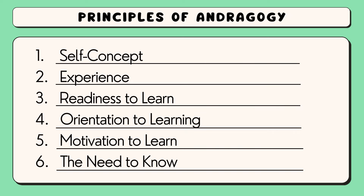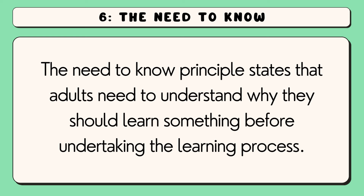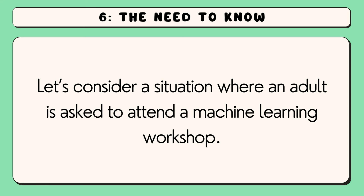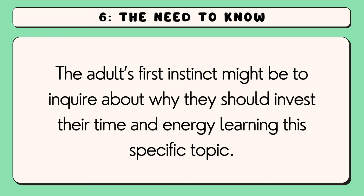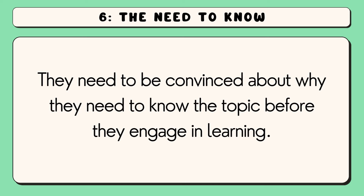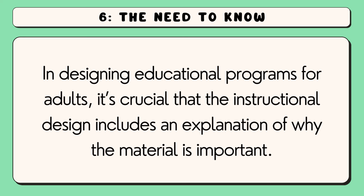Finally, the sixth principle is the need-to-know. The need-to-know principle states that adults need to understand why they should learn something before undertaking the learning process. For instance, let's consider a situation where an adult is asked to attend a machine learning workshop. The adult's first instinct might be to inquire about why they should invest their time and energy learning this specific area. They need to be convinced about why they need to know the topic before they engage in learning. So, in designing educational programs for adults, it's crucial that the instructional design includes an explanation of why the material is important.